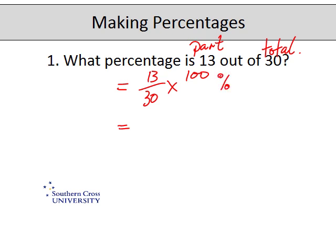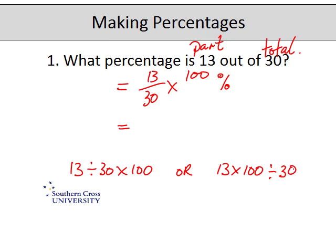So if we do that with a calculator, we need to go 13 divided by 30 times by 100. Or we can go 13 times by 100 divided by 30 — it doesn't matter, because in order of operations multiplication and division have equal precedence. This comes out at 43.3 reoccurring percent, so I would write this as 43.3 percent.